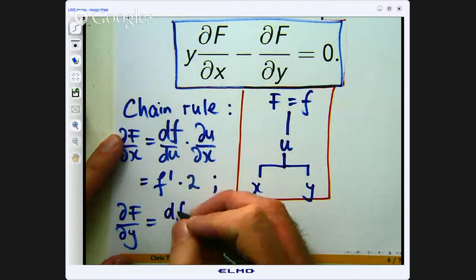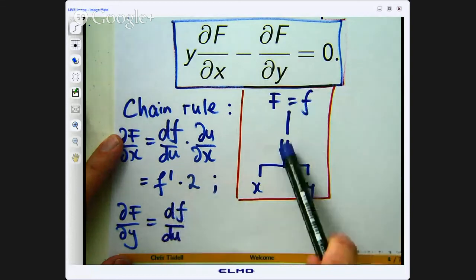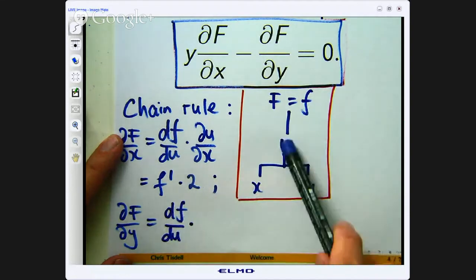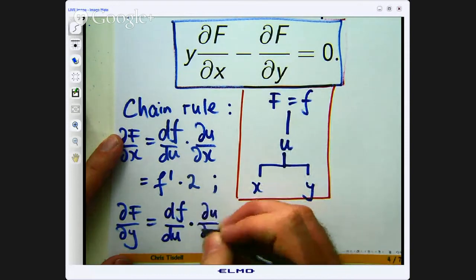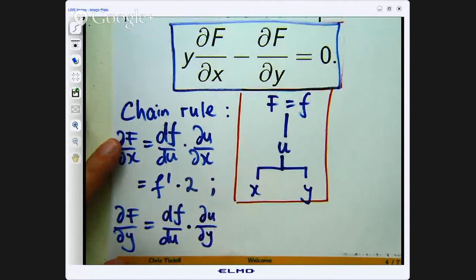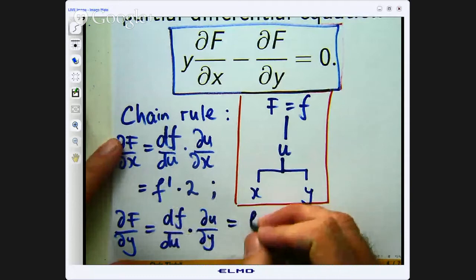And again we would have straight d's on this one because f depends on one thing, u. And we would have curly d's on the next one because u depends on two things. Okay, x and y. Okay, so we don't know what this is. Let's just write it as f' to save a bit of space.